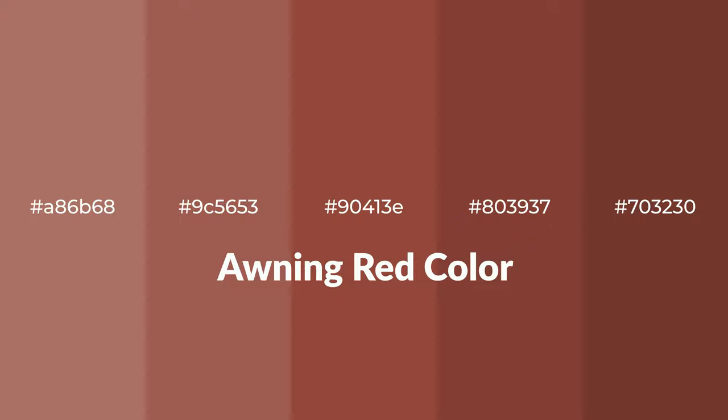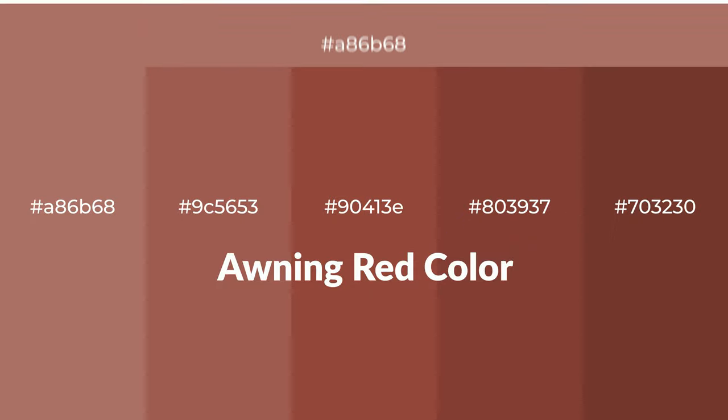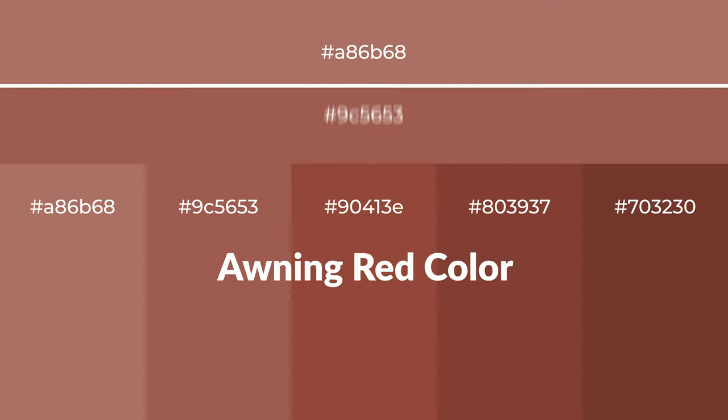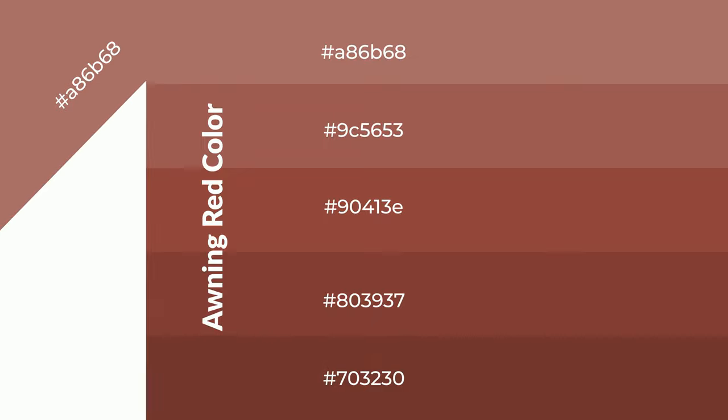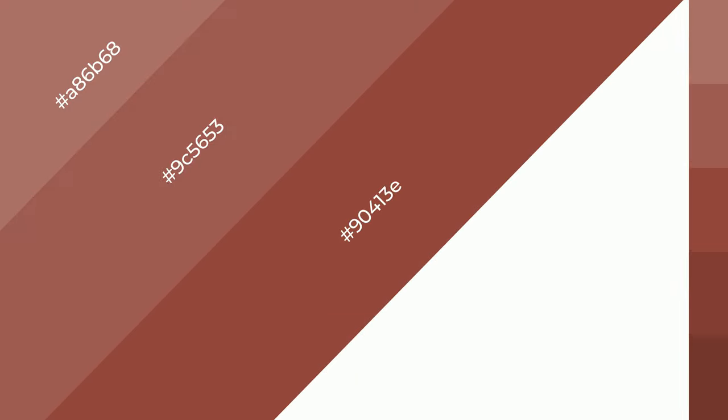Warm shades of awning red color with red hue for your next project. To generate tints of a color, we add white to the color — tints create light and exquisite emotions. To generate shades of a color, we add black to the color, and it is used in patterns, 3D effects, and layers. Shades create depth and drama.